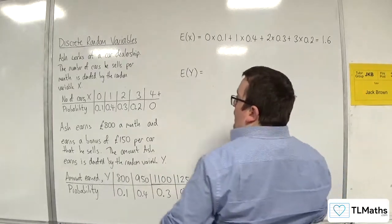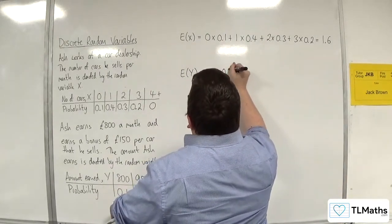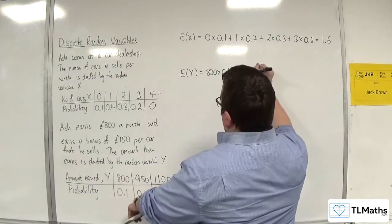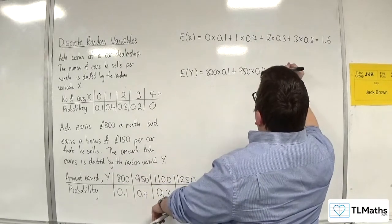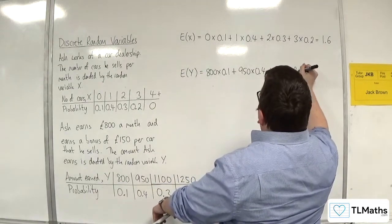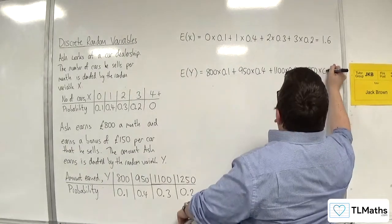So, that would be 800 times 0.1 plus 950 times 0.4 plus 1100 times 0.3 plus 1250 times 0.2.